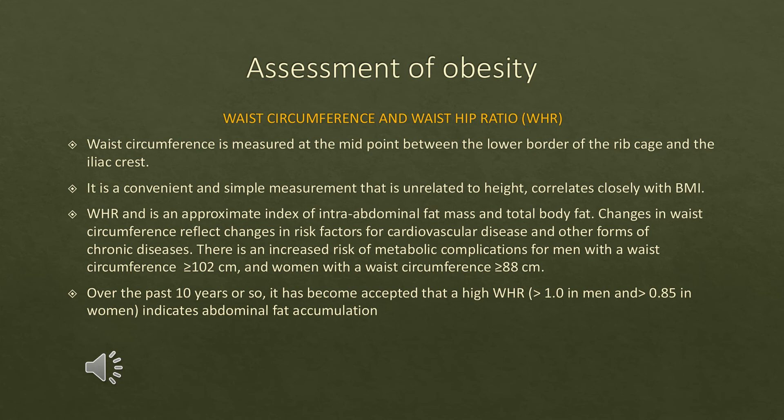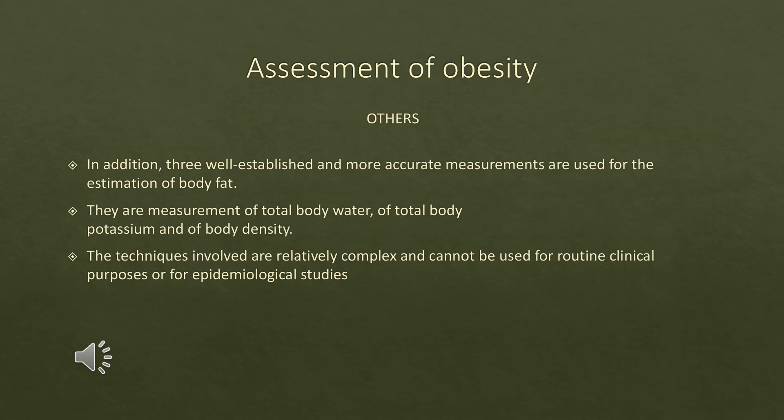A high waist-hip ratio — greater than 1 in men and greater than 0.85 in women — indicates abdominal fat accumulation. Other methods for assessing obesity include assessment of total body water, total body potassium, body density, and imaging techniques such as contrast CT scans. However, these are complicated methods and cannot be used routinely in clinical settings.